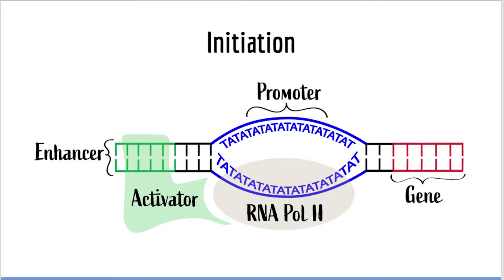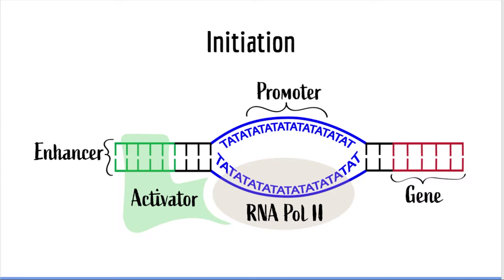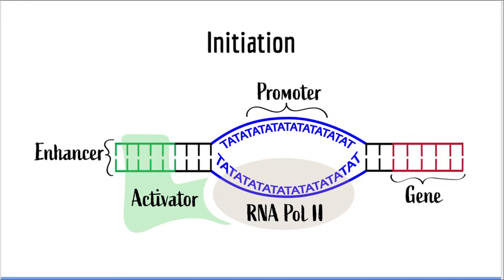Here we have a simplified illustration of initiation of transcription. Transcription of most eukaryotic genes involves the interplay of various transcription factors and is an extremely complex process. This is a gross simplification, but it shows the most important concepts of RNA transcription that you must be familiar with for the USMLE Step 1. First, a transcription factor such as an activator will bind to a regulatory sequence called an enhancer. There are many mechanisms by which a transcription factor can help RNA polymerase bind the promoter sequence, however you do not need to know these. What you need to know is that transcription factors such as activators are essential for initiation of transcription.